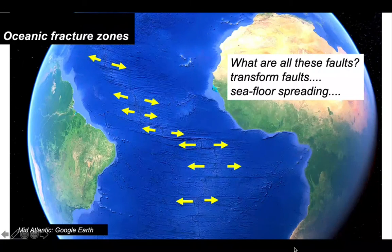So what are all these faults? They're transform faults — part of the primary evidence for seafloor spreading.